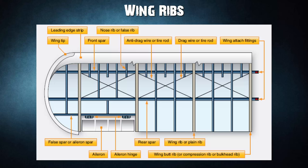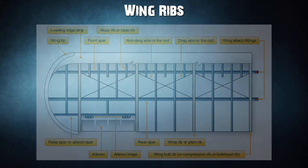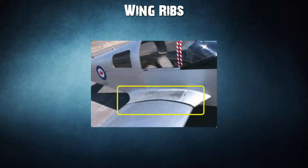Drag and anti-drag wires may also be found in a wing, crisscrossed between the spars to form a truss resisting forces acting in the direction of the wing chord. These tension wires are also referred to as tie rods. The wire designed to resist the backward forces is called a drag wire; the anti-drag wire resists the forward forces in the chord direction. At the inboard end of the wing spars, wing attach fittings provide a strong and secure method for attaching the wing to the fuselage. The interface between the wing and fuselage is often covered with a fairing to achieve smooth airflow, which can be removed for access to the wing attach fittings.